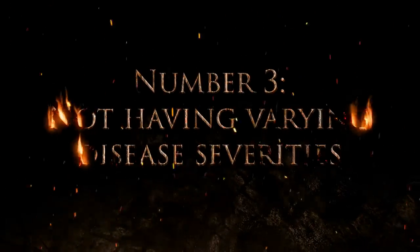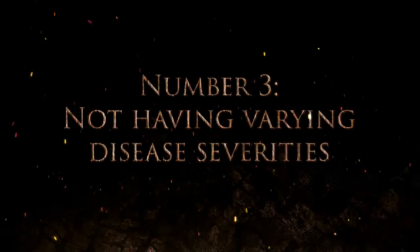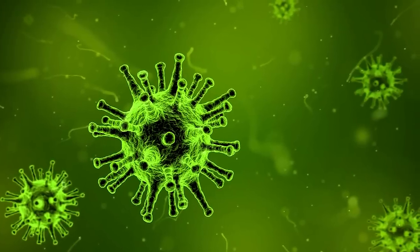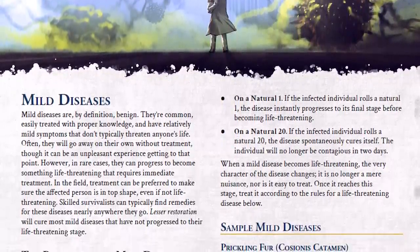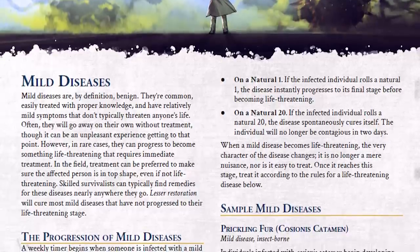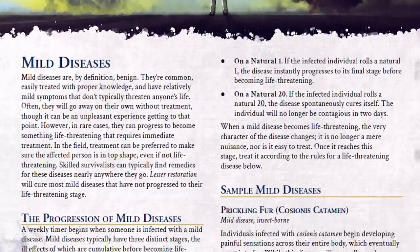Number three: not having varying disease severities. Many times in D&D, a disease is a disease is a disease — but that's not true in the real world. Some things are minor, other things are really, really bad. There should be a variety of disease severities in your game. Mild diseases are, by definition, benign. They're common, easily treated with proper knowledge, and have relatively mild symptoms that don't typically threaten someone's life.